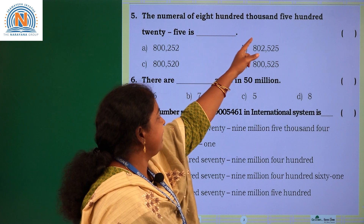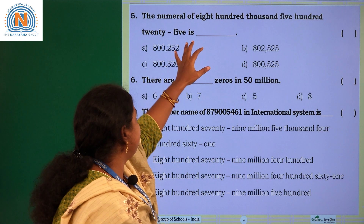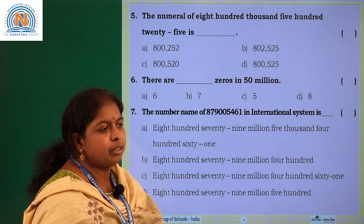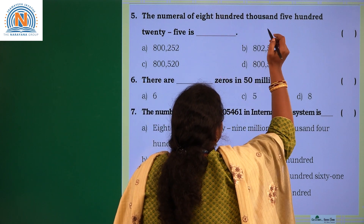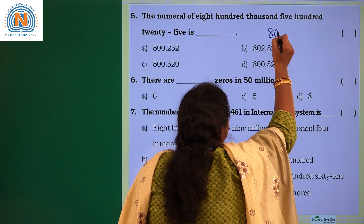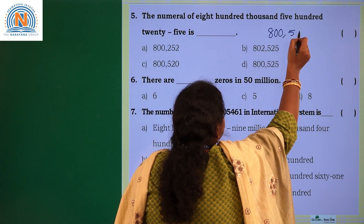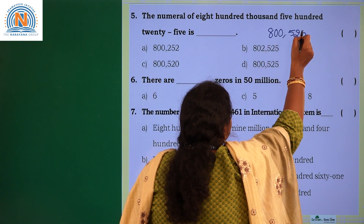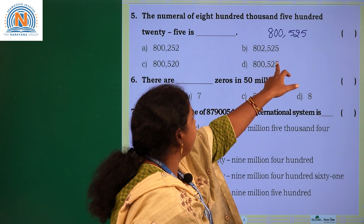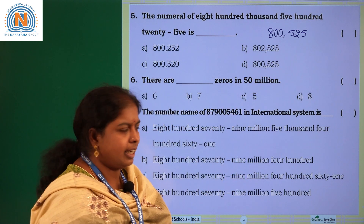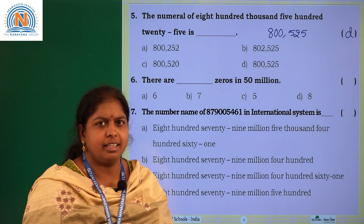Next question: the numeral of eight hundred thousand five hundred twenty-five. We need to write its numeral. Eight hundred thousand five hundred twenty-five — in which option do you have this? Option D. So choose option D.